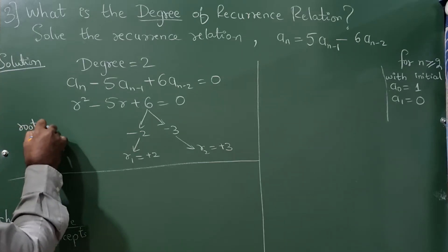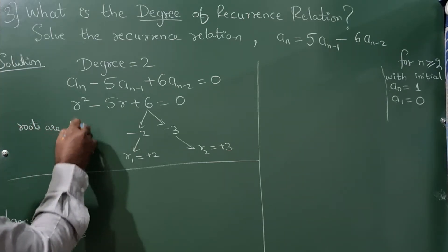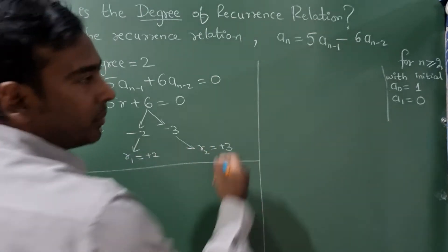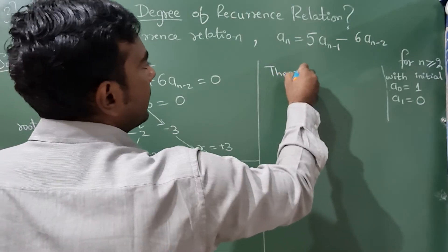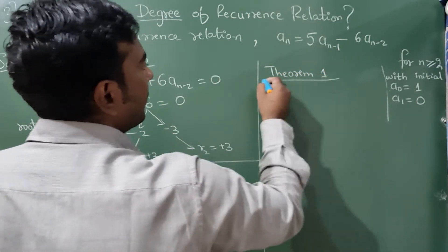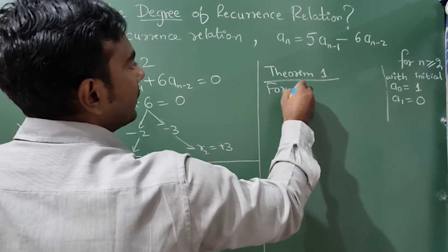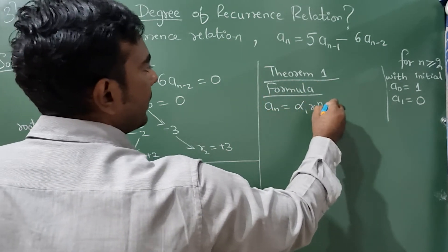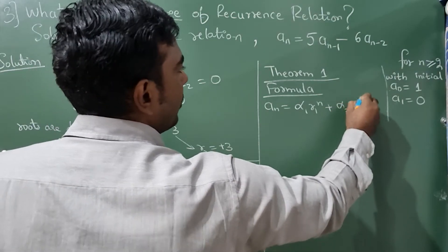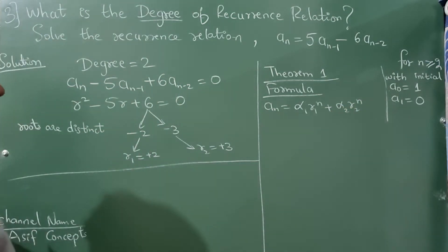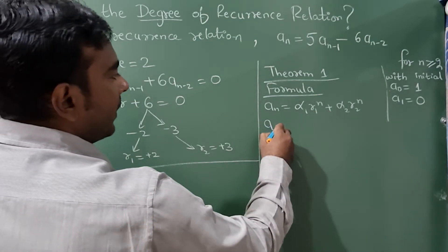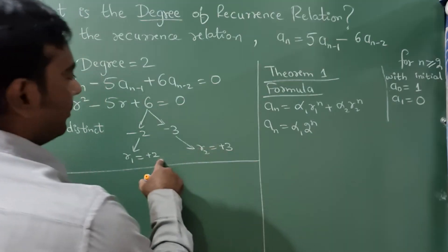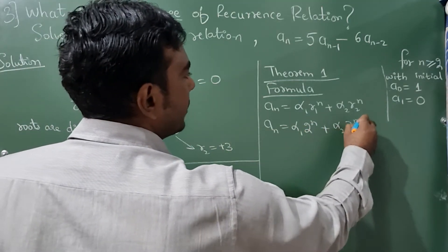The roots are distinct. When the roots are distinct — meaning different — you need to apply Theorem 1. For that, the formula is aₙ = α₁·r₁ⁿ + α₂·r₂ⁿ. Substituting r₁ and r₂ values: aₙ = α₁·2ⁿ + α₂·3ⁿ.